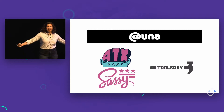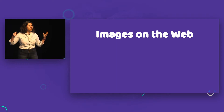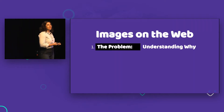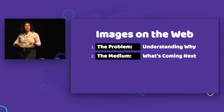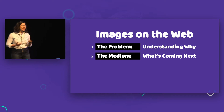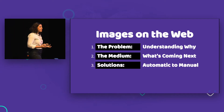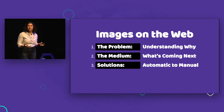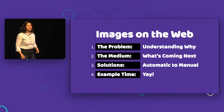This talk is all about images on the web, and we're going to look at that from a couple of perspectives. First, we'll look at the problem with images on the web and understanding why we got to where we are. Then we'll talk about the mediums — the images themselves, the paint, the canvas, what's coming next. Then solutions — from automatic to semi-automatic to manual — and then example time.